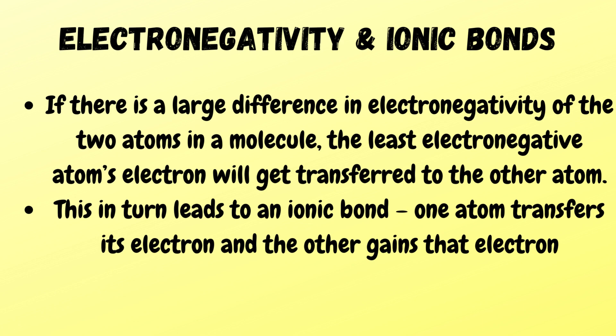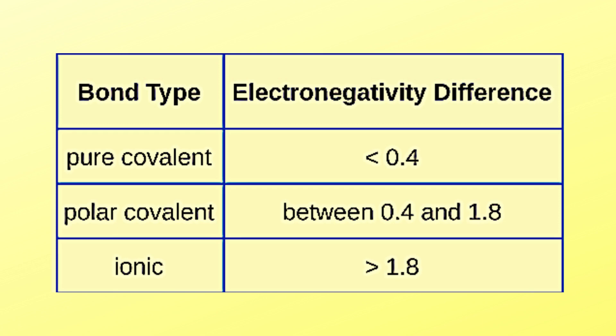If there is a large difference in electronegativity of the two atoms in a molecule, the least electronegative atom's electron will get transferred to the other atom, leading to an ionic bond. When the electronegativity difference is less than 0.4, the bond type is pure covalent. If the difference is between 0.4 and 1.8, the bond type is polar covalent. If greater than 1.8, the bond is ionic.